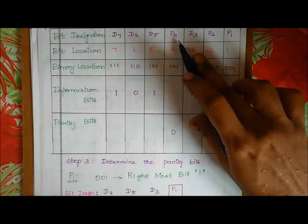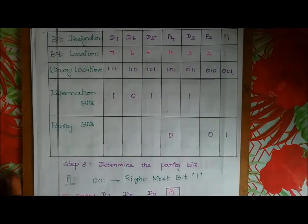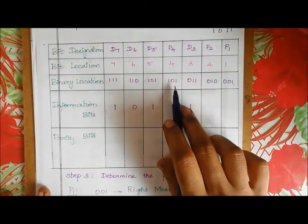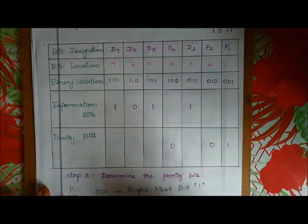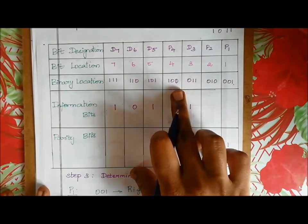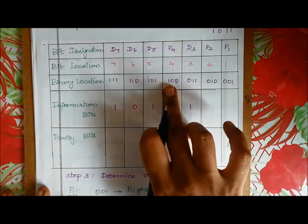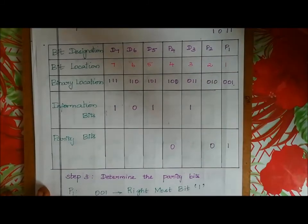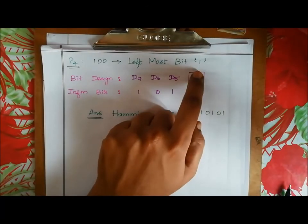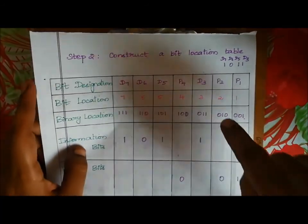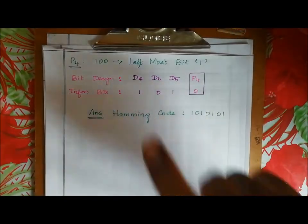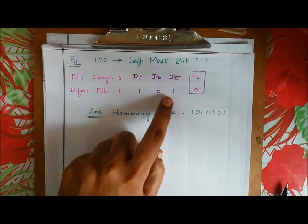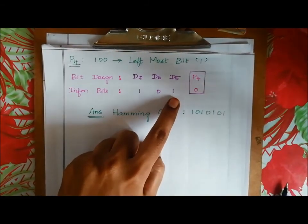For P4, look at bit positions whose binary location has leftmost bit = 1 — binary 100. Those are D5, D6, and D7. Information bits: D5=1, D6=0, D7=1. Total number of 1s is 2 — even. So P4 value is 0.